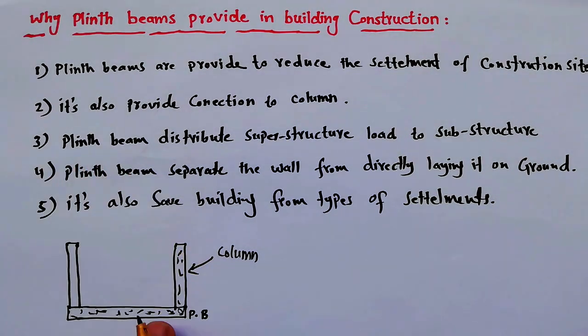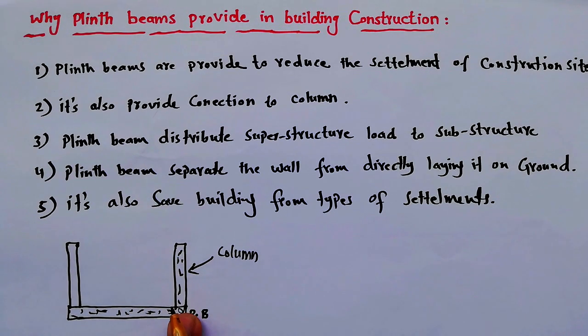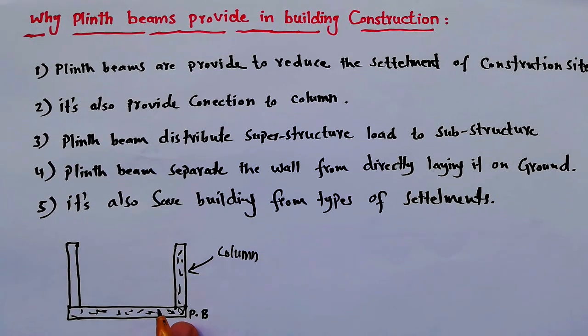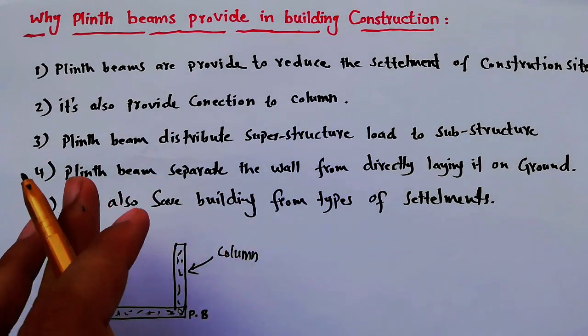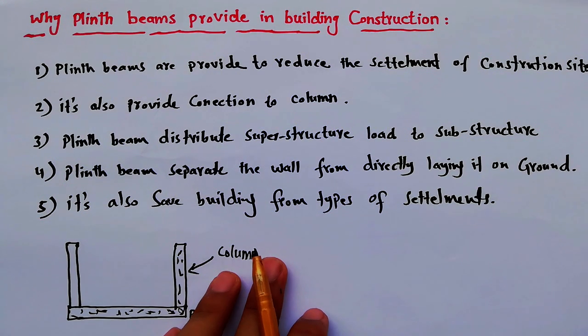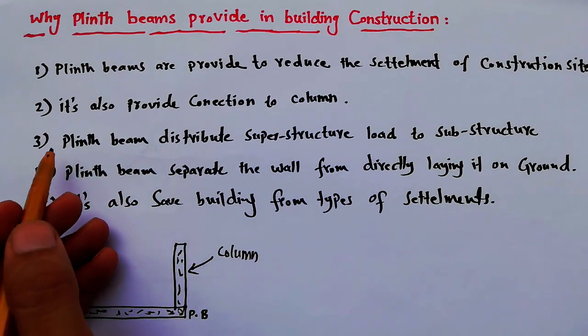If the connection between the column and beam is not good, it is also dangerous for the superstructure — it can cause failure.